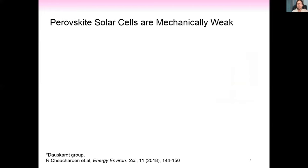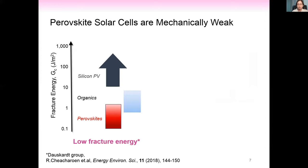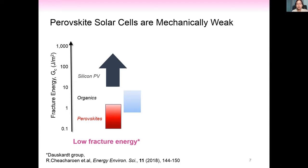Thermal expansion coefficients span over two orders of magnitude across device layers — from 4 to 200 — creating multiple potential delamination sites. Adding an encapsulant layer of EVA or Surlyn increases fracture energy four times. However, encapsulant compliance matters: EVA with an elastic modulus of 10 MPa is compliant and absorbs mismatch strain during thermal cycling, showing no delamination after 200 cycles. Surlyn, with 40 times higher elastic modulus than EVA, shows delamination visible as rainbow fringes and confirmed by low current in laser beam induced current measurements.